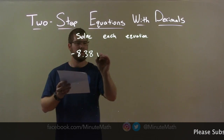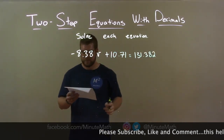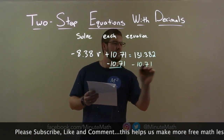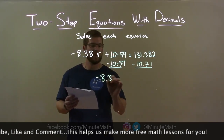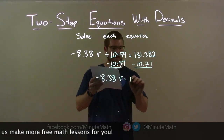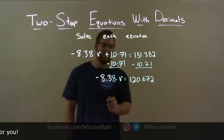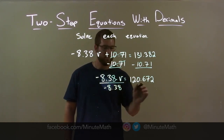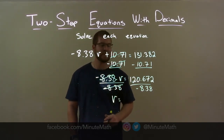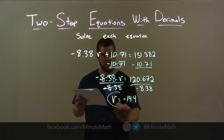Negative 8.38v plus 10.71 equals 131.382. I want to get v by itself. First step is subtracting 10.71 from both sides. This eliminates the 10.71 on the left, leaving negative 8.38v. On the right, 131.382 minus 10.71 is 120.672. Now I'm multiplying by negative 8.38 times v, so opposite of multiplication is division. Divide both sides by negative 8.38 — negative 8.38 is eliminated, leaving v by itself. 120.672 divided by negative 8.38 is negative 14.4. And there we have our final answer.